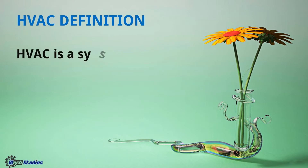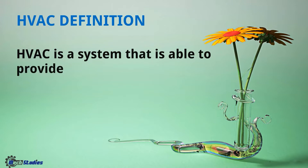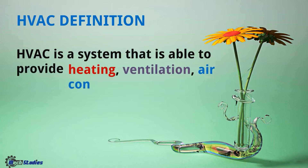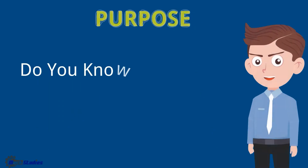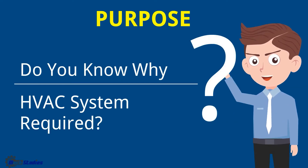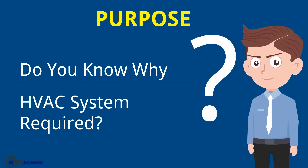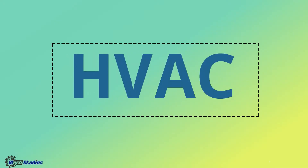So what is the basic definition of HVAC? It's very simple - HVAC is a system that is able to provide heating, ventilation, and air conditioning based on our requirements. So what is the purpose of the HVAC system? Let's see the purpose of HVAC. First we will look at the purpose of H, that is heating.